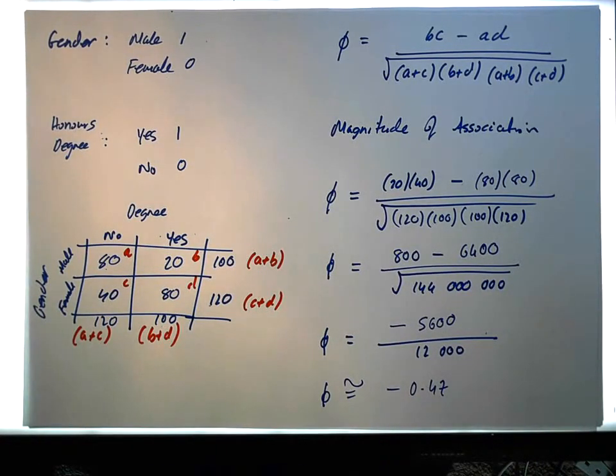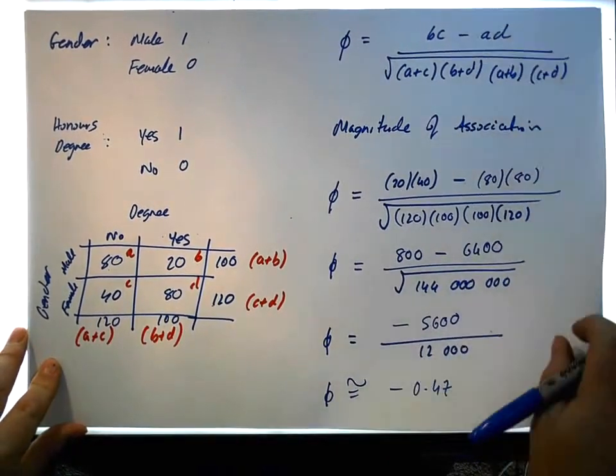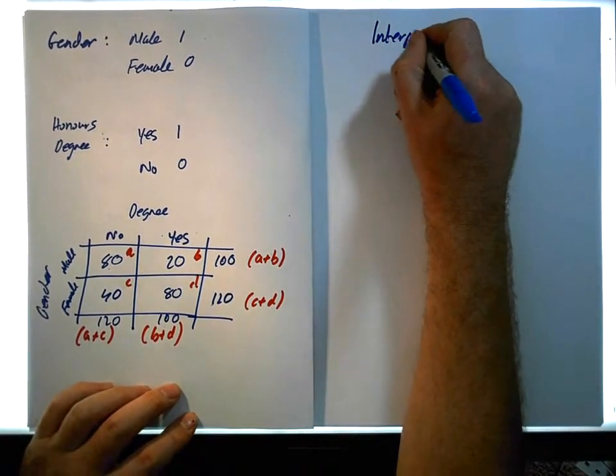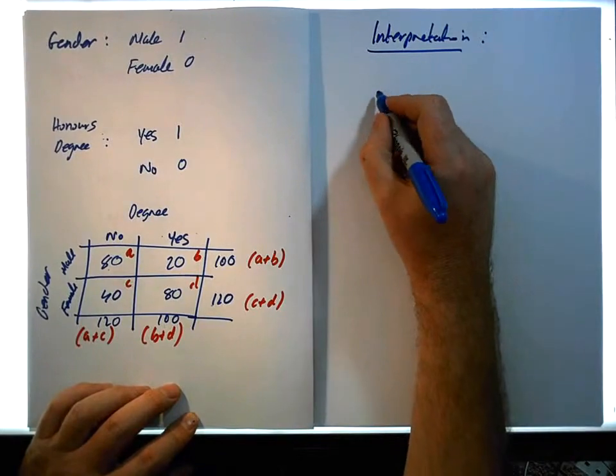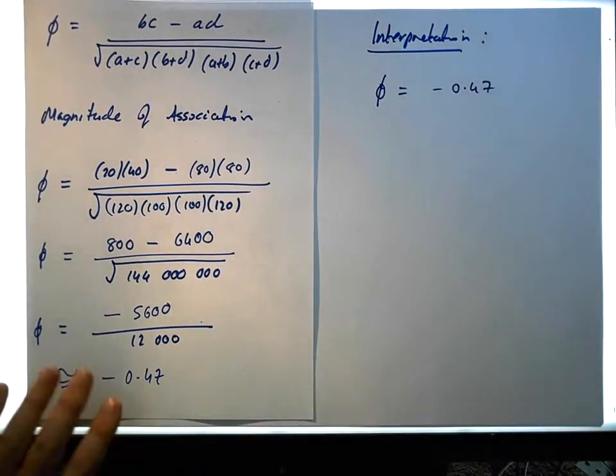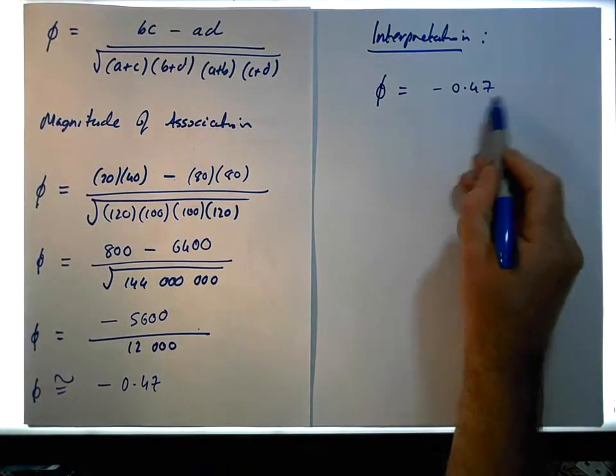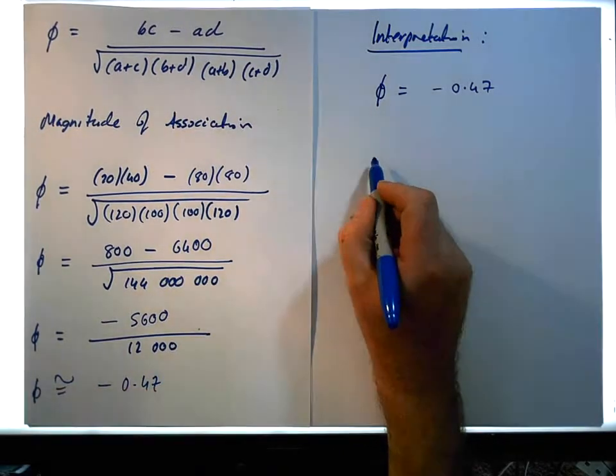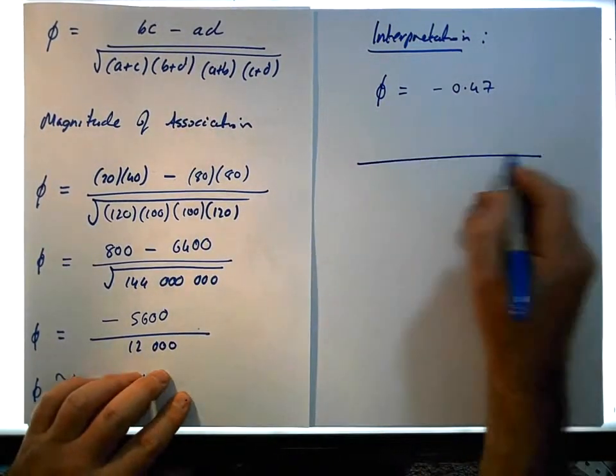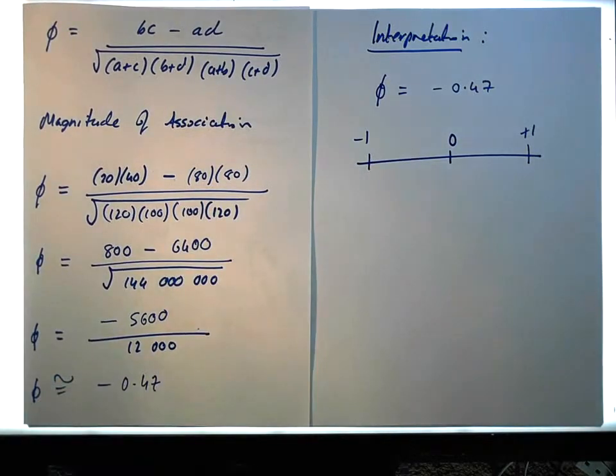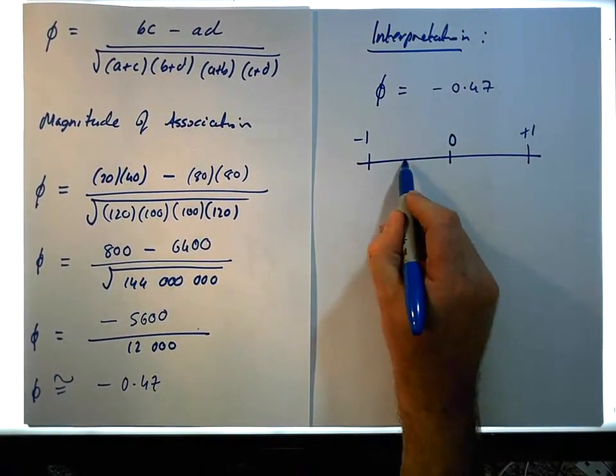Like any correlation coefficient, the correlation coefficient can range between 0 and 1. So for interpretation, what we have here is phi equals minus 0.47. If we look at that particular correlation coefficient and interpret it, remember the correlation coefficient ranges symmetrically around 0, between plus 1 and minus 1. What we have is on the negative side, down around here.